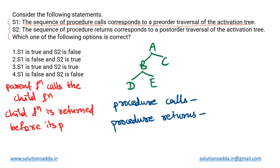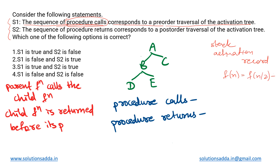What exactly do we mean by this? We know that whenever procedure calls are made — which means it is like a recursion call — for making a recursive call, what do we do? We use a stack and we create the activation records which are pushed into the stack. S1 is saying that the sequence in which the calls are made — for example, if we have a recursive function like f(n) = f(n/2) + k — follows a specific order.